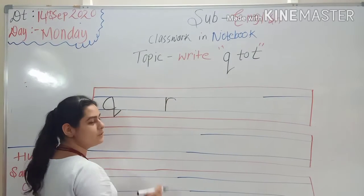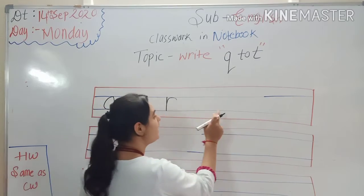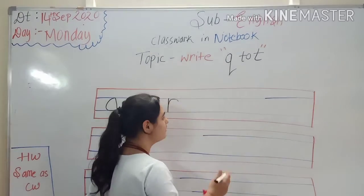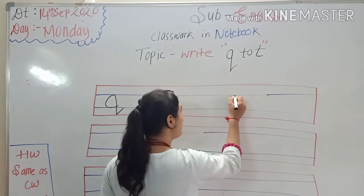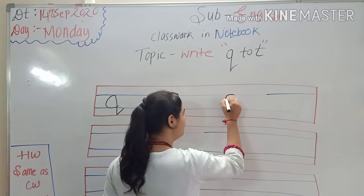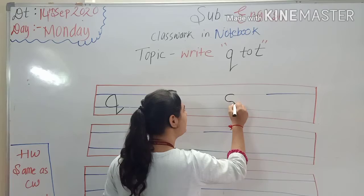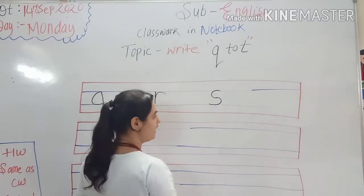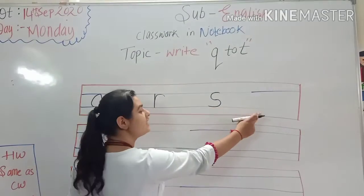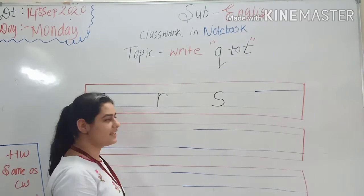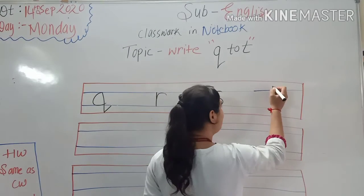Okay. Next curve like this. Q. Now what comes after S? Kids tell me. Yes, it's T. It's T. Now here we write T.